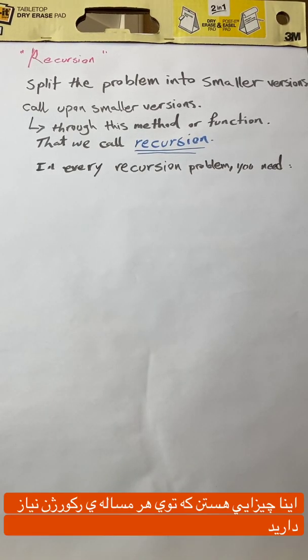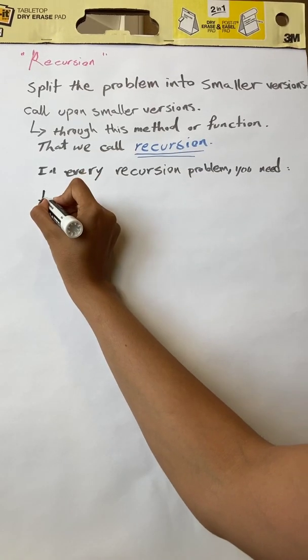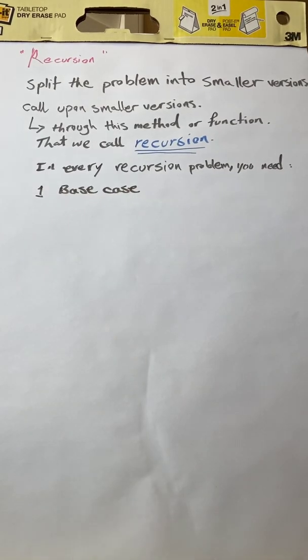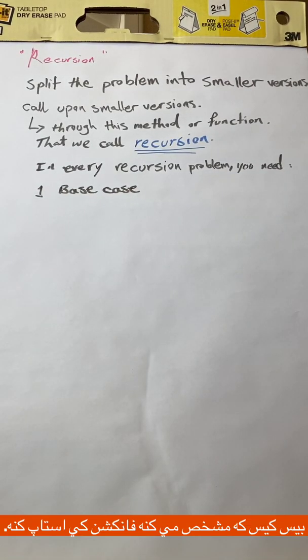These are some things that you're going to need in every recursion problem. First one is a base case. Base case tells the function when to stop.